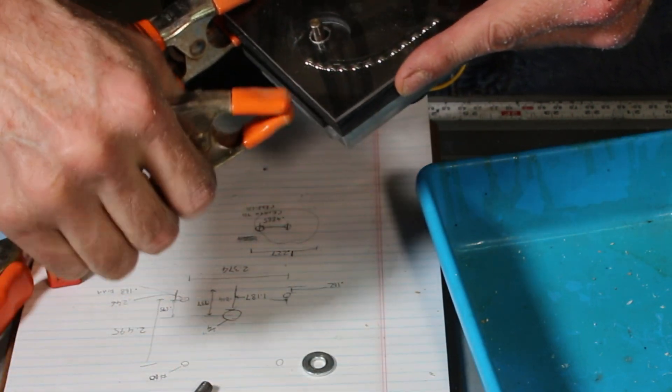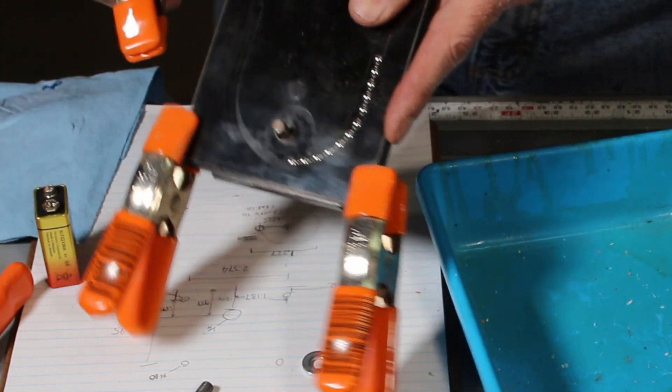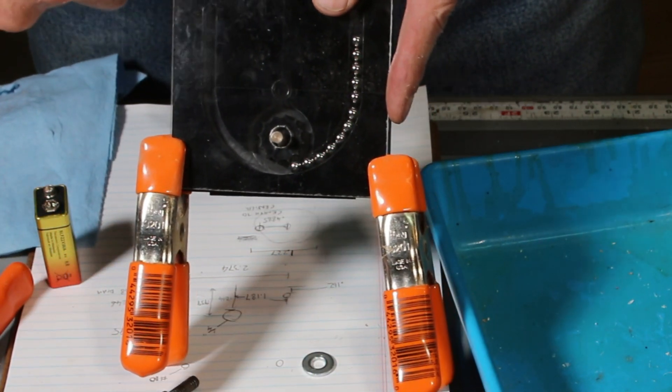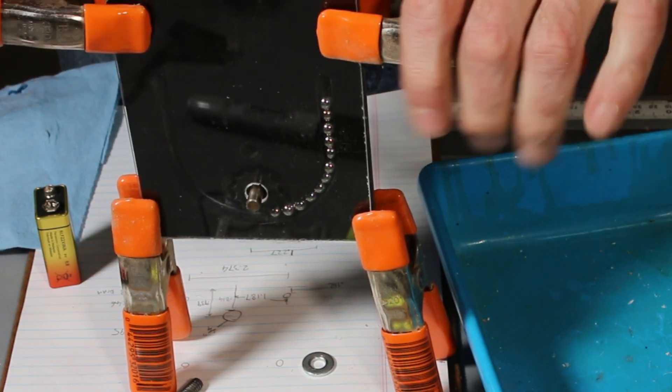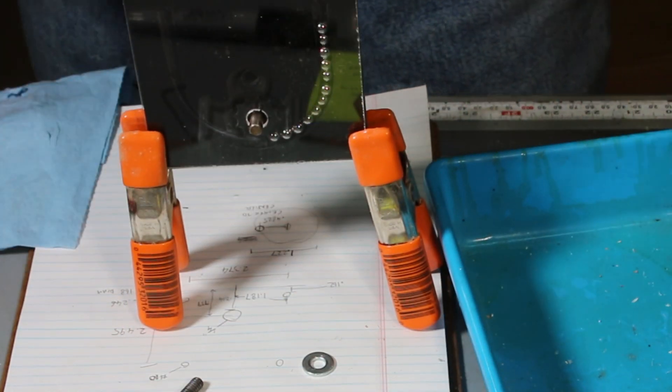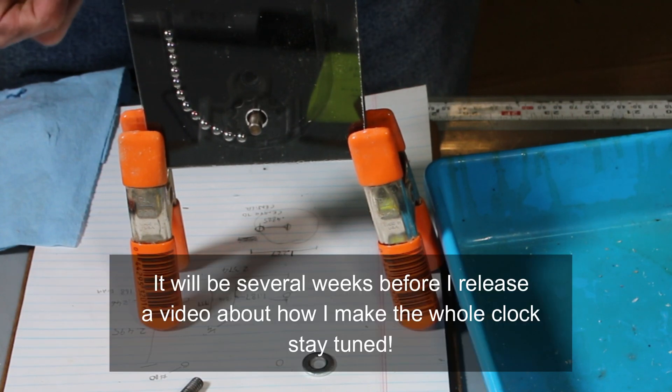Clipping that cover on with some clamps here. The clamps make a handy stand to hold the whole thing up too, so it will be vertical in the final clock product. Now I've got a 9-volt battery here. I'm just going to touch it on and wow, look at that! Works great!